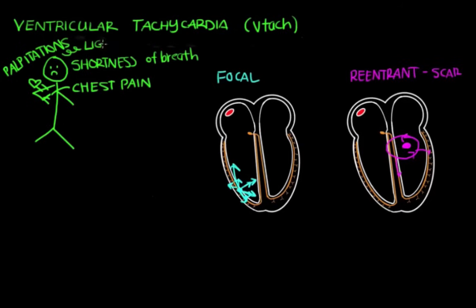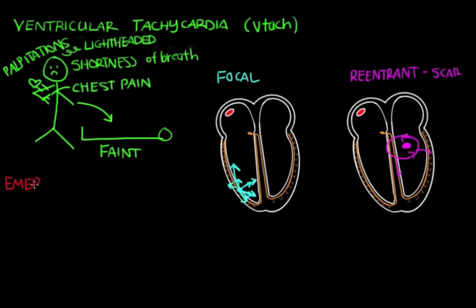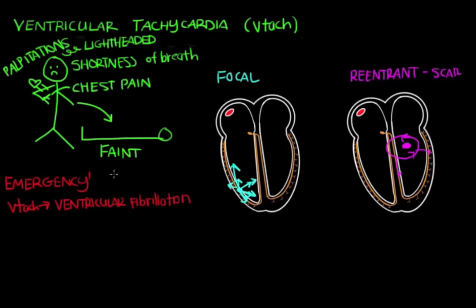Other people feel lightheaded or dizzy because the brain isn't getting enough oxygen. In extreme cases, oxygen to the brain is so low that the person might faint or pass out. VTAC is a serious condition requiring immediate medical attention. The person might have inadequate blood pressure, and VTAC can also turn into the deadly arrhythmia called ventricular fibrillation, where the ventricular walls are spasming and no blood is circulating. If not corrected within seconds to minutes, this leads to death.